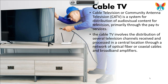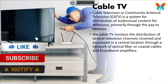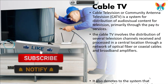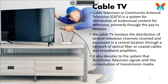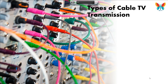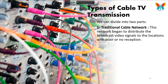Cable TV. Cable television, or community antenna television (CATV), is a system for distribution of audiovisual content for television, primarily through pay TV services. Cable TV involves the distribution of several television channels received and processed in a central location through a network of optical fiber or coaxial cables and broadband amplifiers. It also refers to the system that distributes television signals using transmission media.